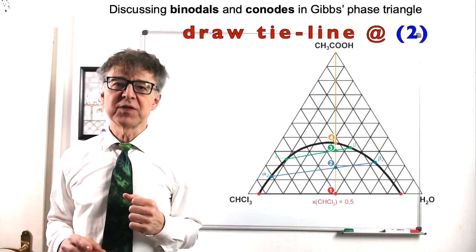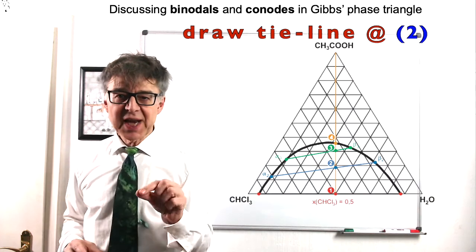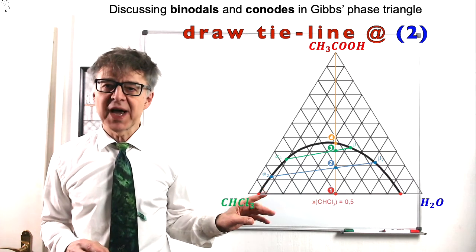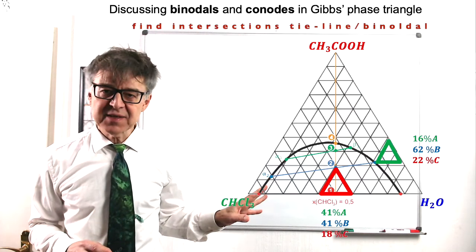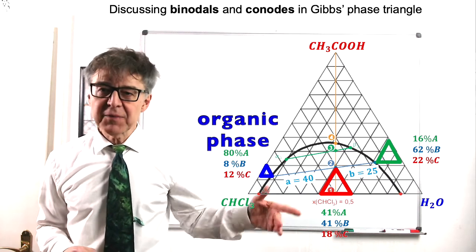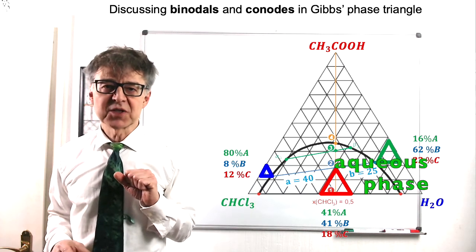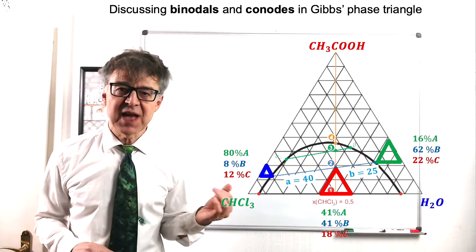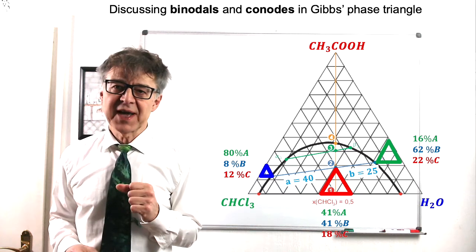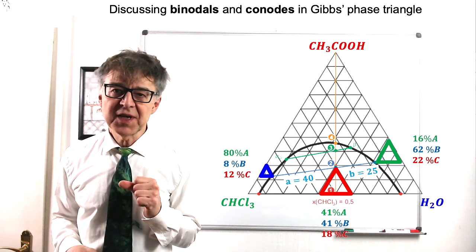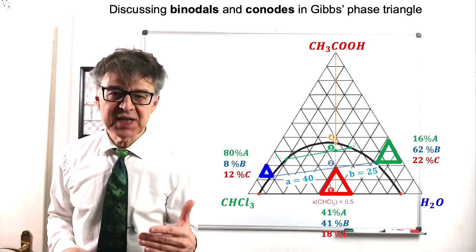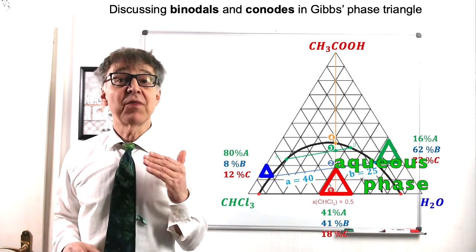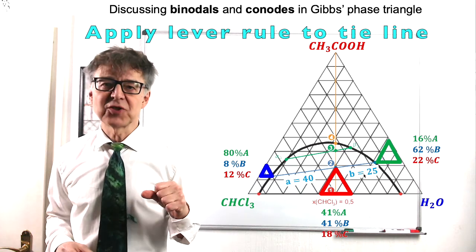We may draw tie lines through points 2 and 3, which tell us which phases are actually present. In point 2, for example, we have an organic phase of the alpha 2 composition and an aqueous phase of beta 2 composition. We may specify the exact composition of the phases alpha 2 and beta 2. Auxiliary triangles have been proven useful here. And we can also specify the quantitative ratio of the phases alpha 2 and beta 2 by application of the lever rule. Lever arm A is larger than lever arm B. This means that phase beta 2 is in excess.